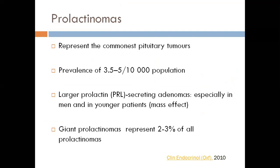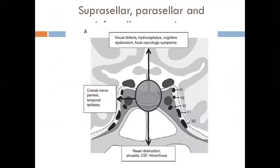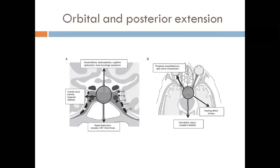Prolactinomas are generally small microadenomas but can enlarge significantly. Depending on the direction of enlargement: upward growth causes visual defects and hydrocephalus; lateral growth involves the cavernous sinus; downward growth can cause nasal obstruction and CSF rhinorrhea; forward growth can cause proptosis and temporal lobe involvement leading to hearing defects.